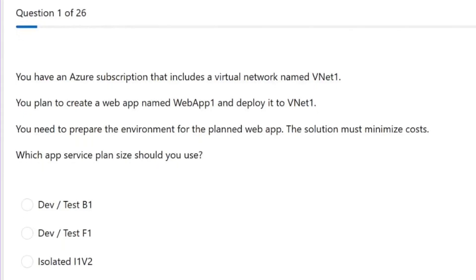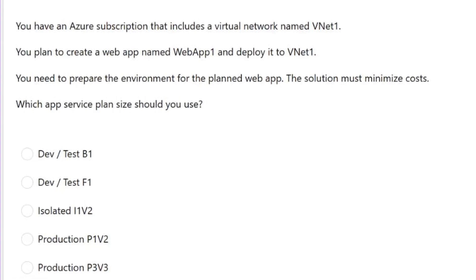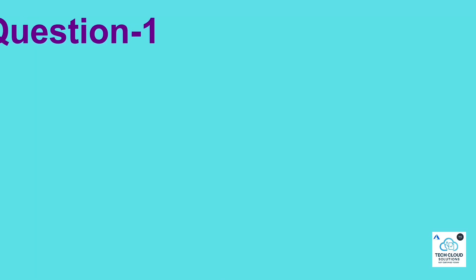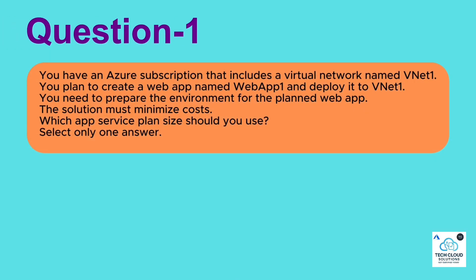Let's look at some real AZ-104 renewal-style questions with clear explanations. These are based on recent patterns and Microsoft Learn topics. Question 1: You have an Azure subscription that includes a virtual network named VNet1. You plan to create a web app named WebApp1 and deploy it to VNet1. You need to prepare the environment for the planned web app. The solution must minimize costs. Which app service plan size should you use?